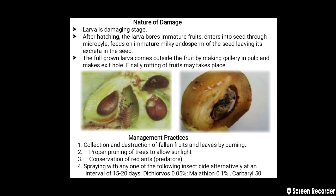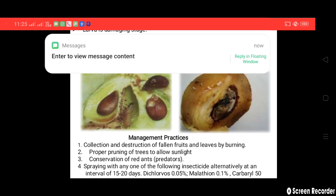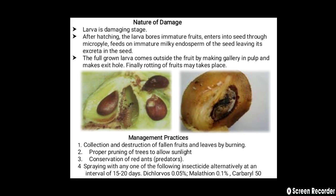Management practices include collection and destruction of fallen fruits and leaves by burning, and proper pruning of trees to allow sunlight. Conservation of red ants as predators is recommended. Spraying with any one of the following insecticides alternately at an interval of 15 to 20 days, such as dichlorvos 0.05% or malathion 0.1%.